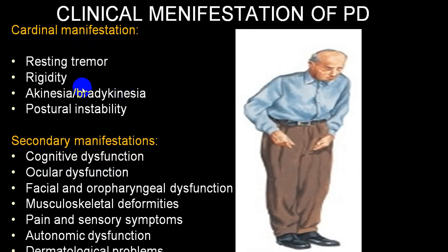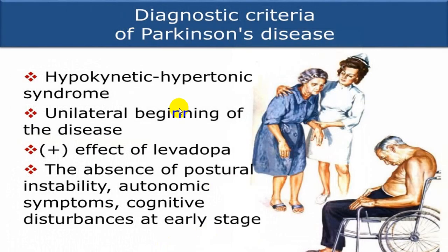Additional features include non-motor dysfunction such as cognitive dysfunction, ocular dysfunction, oropharyngeal dysfunction, mask-like face, musculoskeletal deformities, pain and sensory symptoms, autonomic dysfunction, and dermatological problems. Parkinson's disease is described as a hypokinetic hypertonic syndrome, unilateral onset, responsive to levodopa. In early stage there is absence of postural instability, autonomic symptoms, and cognitive disturbances — these appear in later stages.